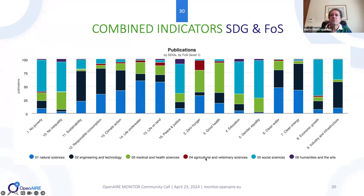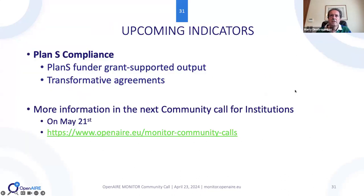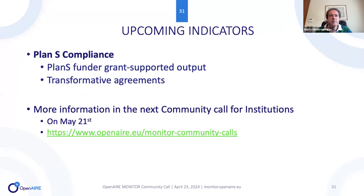There are also new collaboration and academic impact metrics including download and citation data, designed to provide a wider perspective on research influence and collaboration networks. Additionally, new indicators incorporate Open APC data, providing a clearer view of financial aspects in open science — for example total APCs by FoS level one and two, and average APCs per publication. Combined indicators are also introduced, such as SDG publications broken down by both SDG category and FoS level.